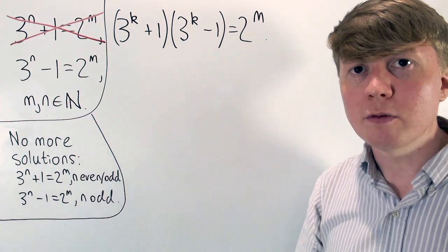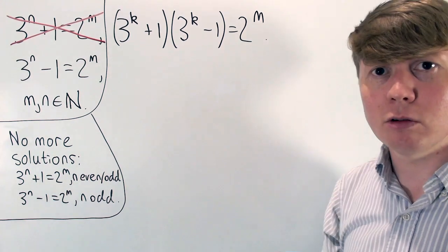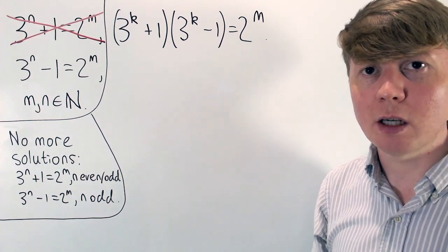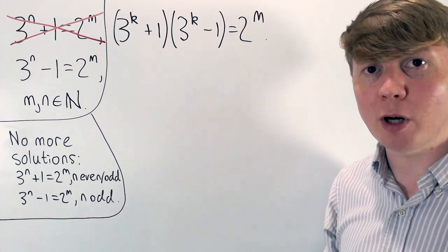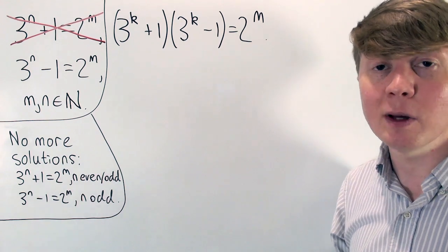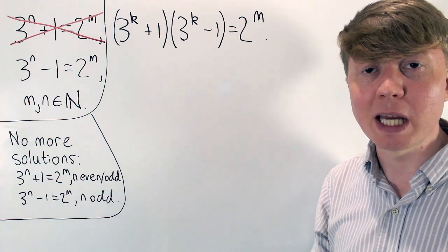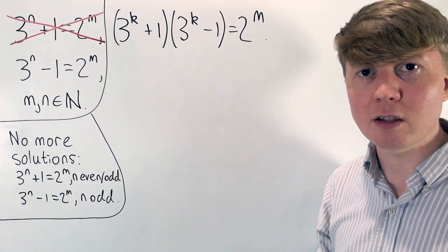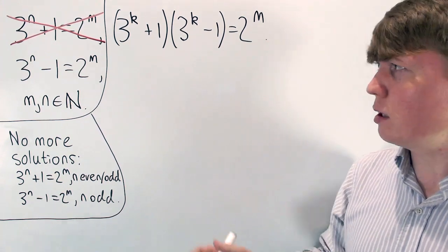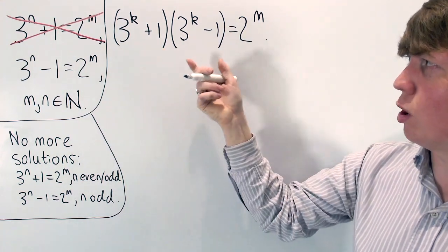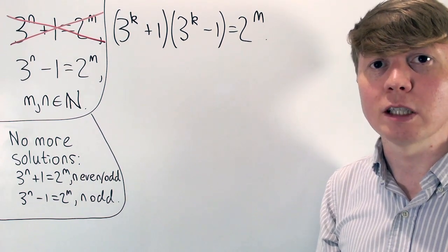We now have two factors of 2 to the m. Any factor of 2 to the m must itself be a power of 2 — think of the prime factorisation: it's just made up of 2s, so you couldn't get factors like 3, 5, or 6 dividing 2 to the m. This tells us that both 3 to the k plus 1 and 3 to the k minus 1 must themselves each be powers of 2, or potentially equal to 1.